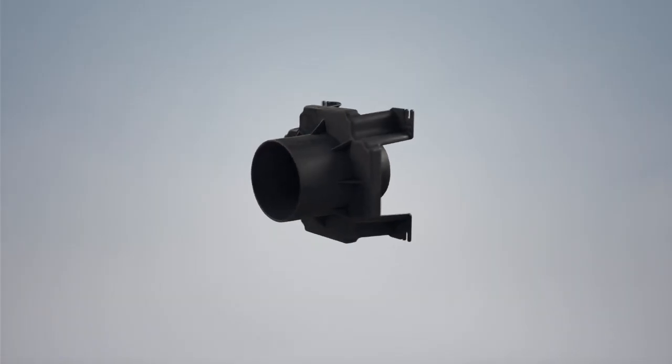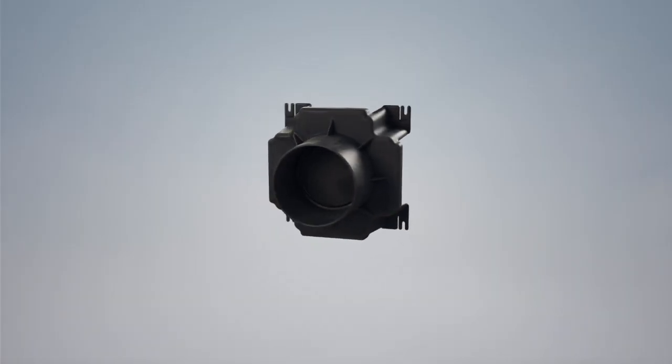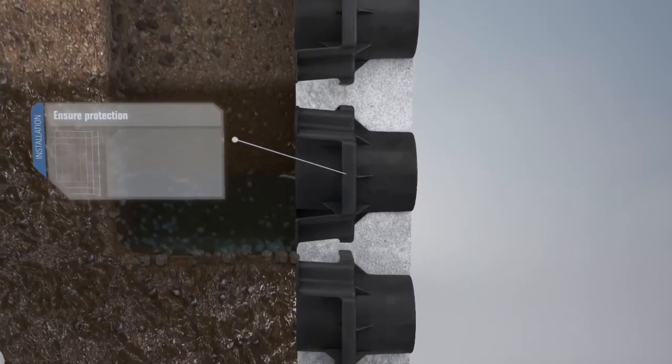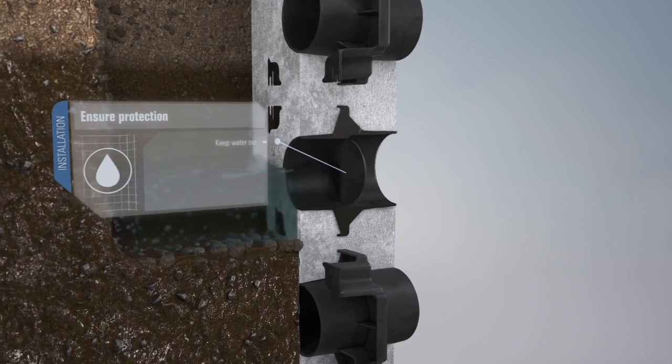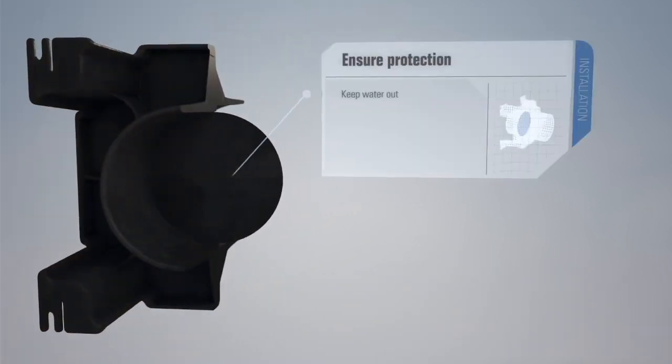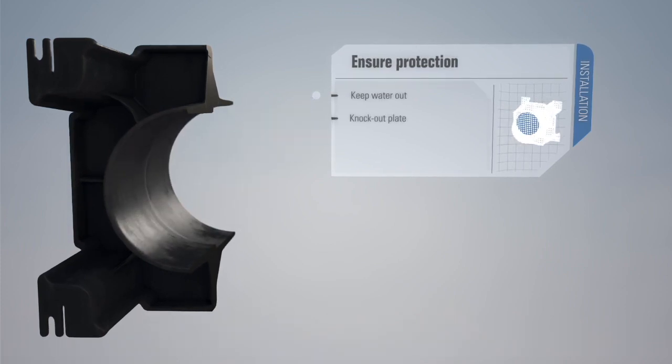You can use the Roxtec Knockout Sleeve UG as a water barrier today and at the same time ensure spare capacity for tomorrow. The sleeve's knockout plate remains tight until you want to install your cable and pipe transits.